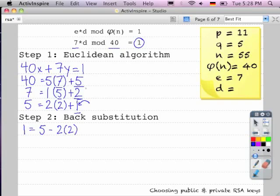And so what we're going to do is substitute the next row, so 2, for the times 2 that we have in that equation. So we're going to say it equals 5 minus 2 times 7 minus 1 times 5. And so what we do is we distribute the 2 through that equation and we combine the like terms. And we'll have 1 equals 3 times 5 minus 2 times 7.